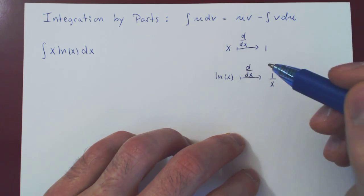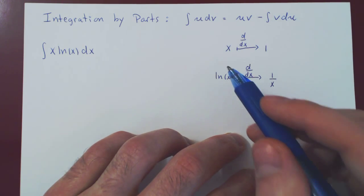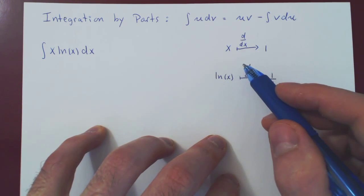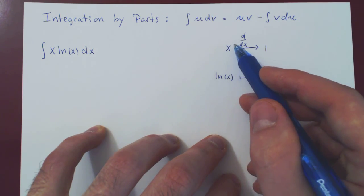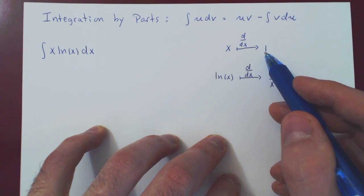And the answer is no. I am saying that we want u to be the function whose derivative gives the greatest simplification. So which is better? Going from the simple function x to the simpler function 1?